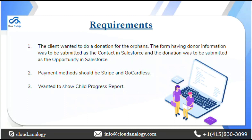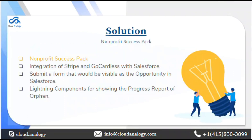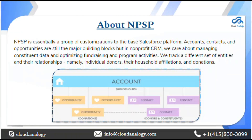The third requirement was to show the child progress report. The solution we used was the NPSP package, connecting Stripe and GoCardless with Salesforce. For showing the orphan progress report, we used Lightning Components. NPSP is initially a group of customizations to the base Salesforce platform — accounts, contacts, and opportunities are still the major building blocks.